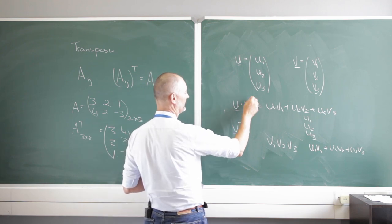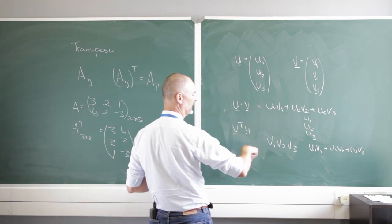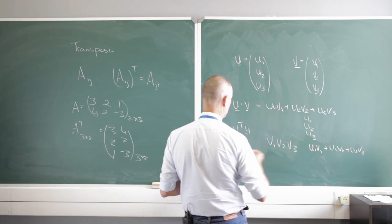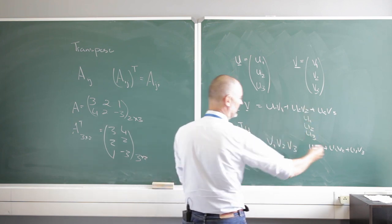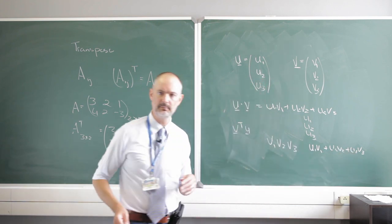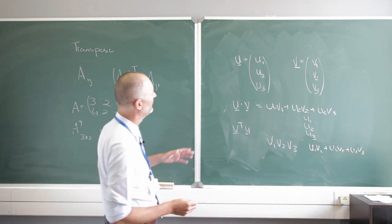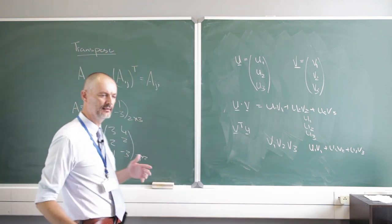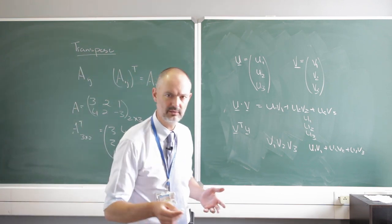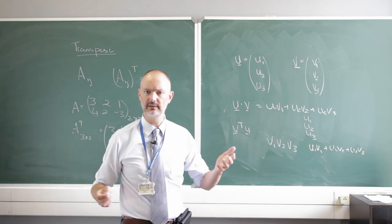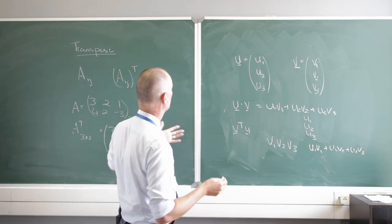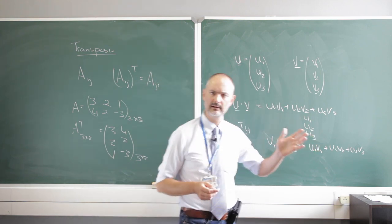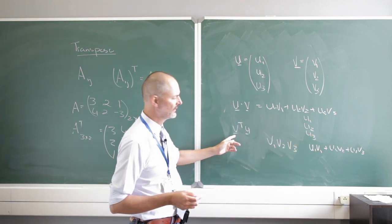In short, that's the transpose of a matrix. There's really nothing to it — you will never struggle with a transpose of a matrix or a symmetric matrix. And it gives a nice way to express the dot product or inner product of two vectors using the transpose.